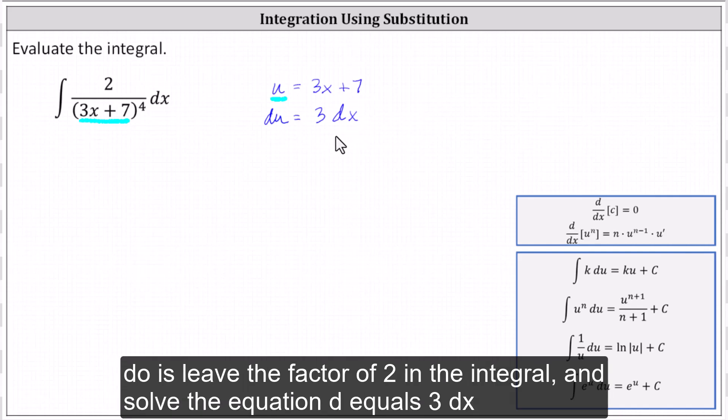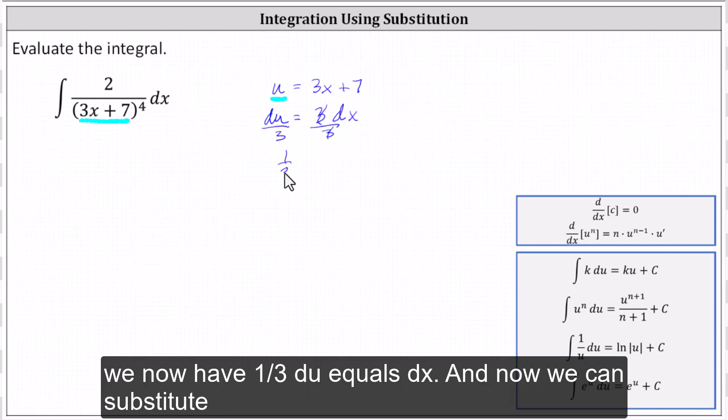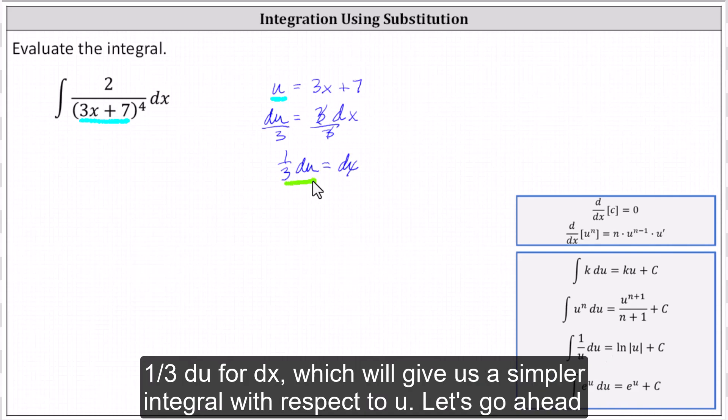So what we'll do is leave the factor of 2 in the integral and solve the equation du equals 3dx for dx. This indicates we divide both sides by 3, simplifying we now have 1/3 du equals dx. And now we can substitute 1/3 du for dx, which will give us a simpler integral with respect to u.